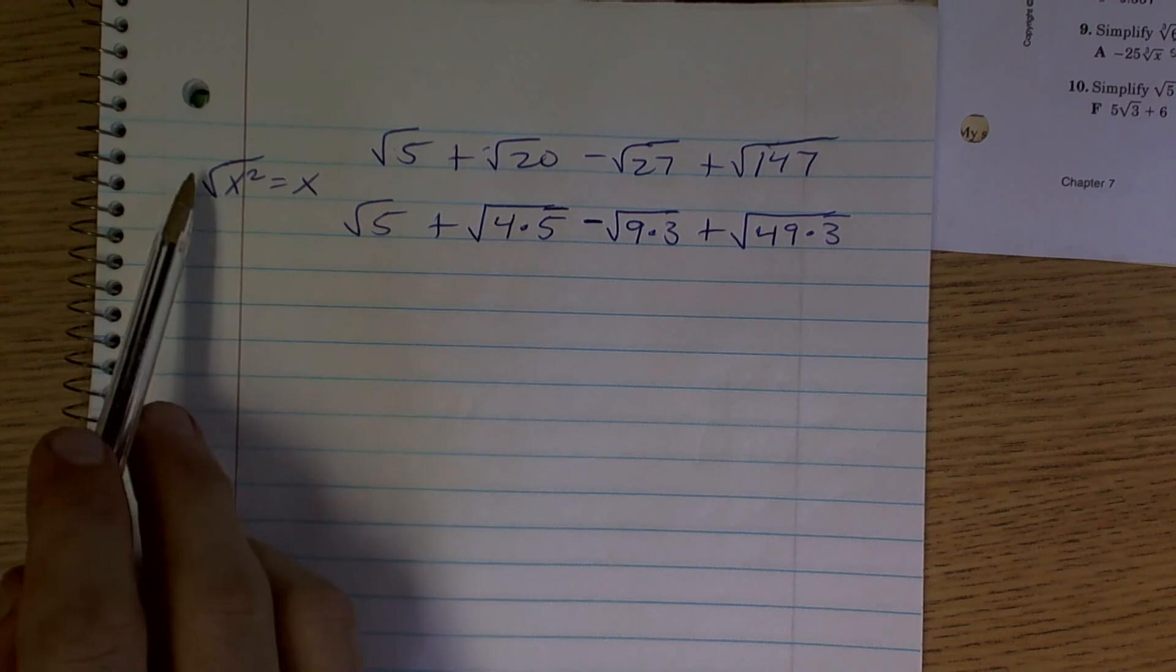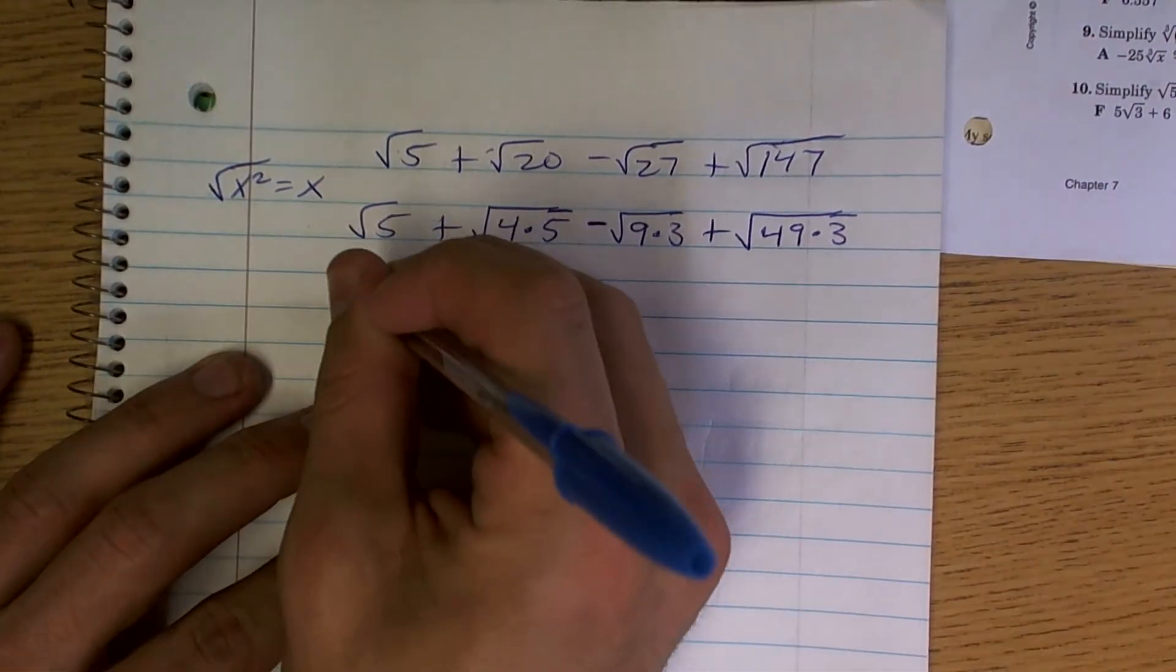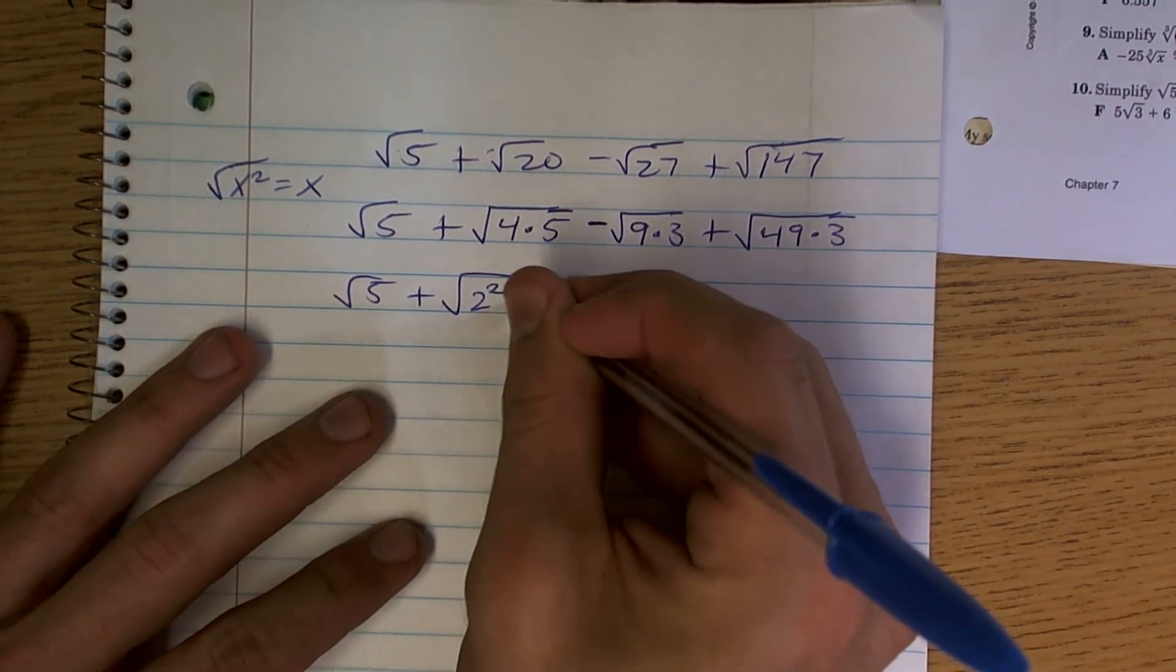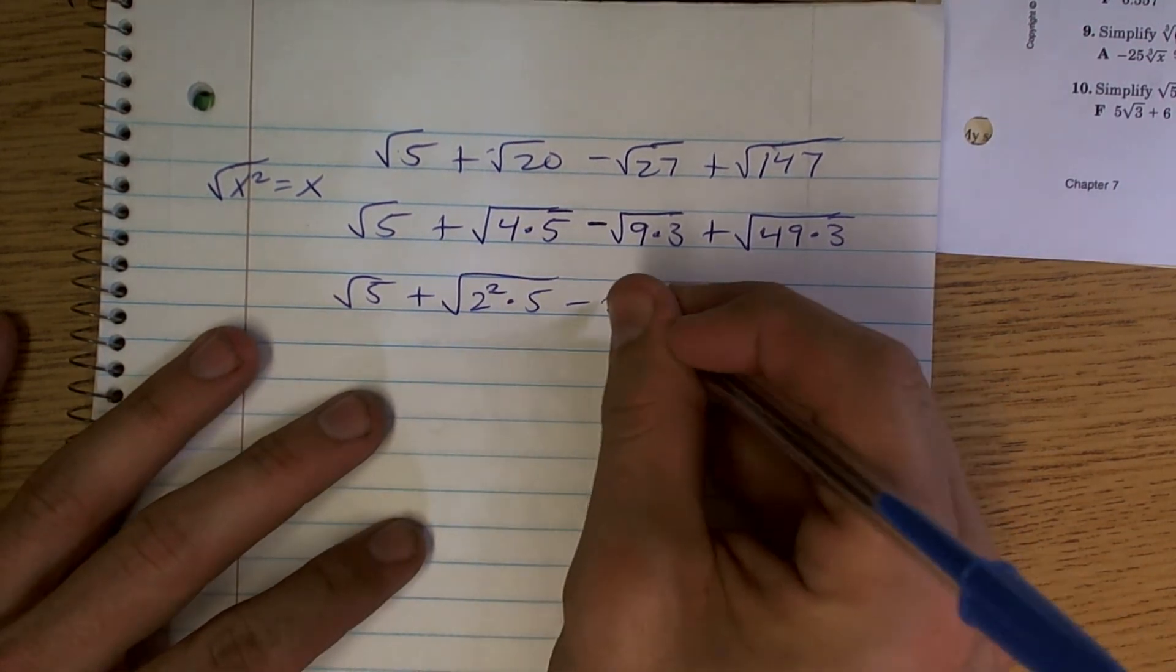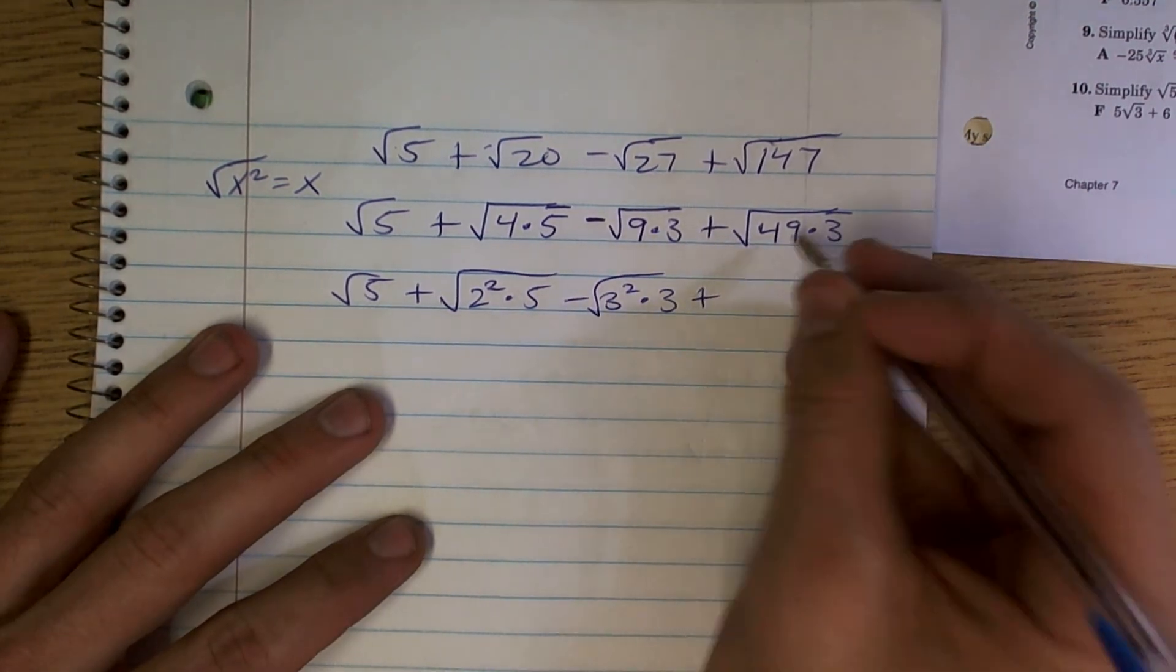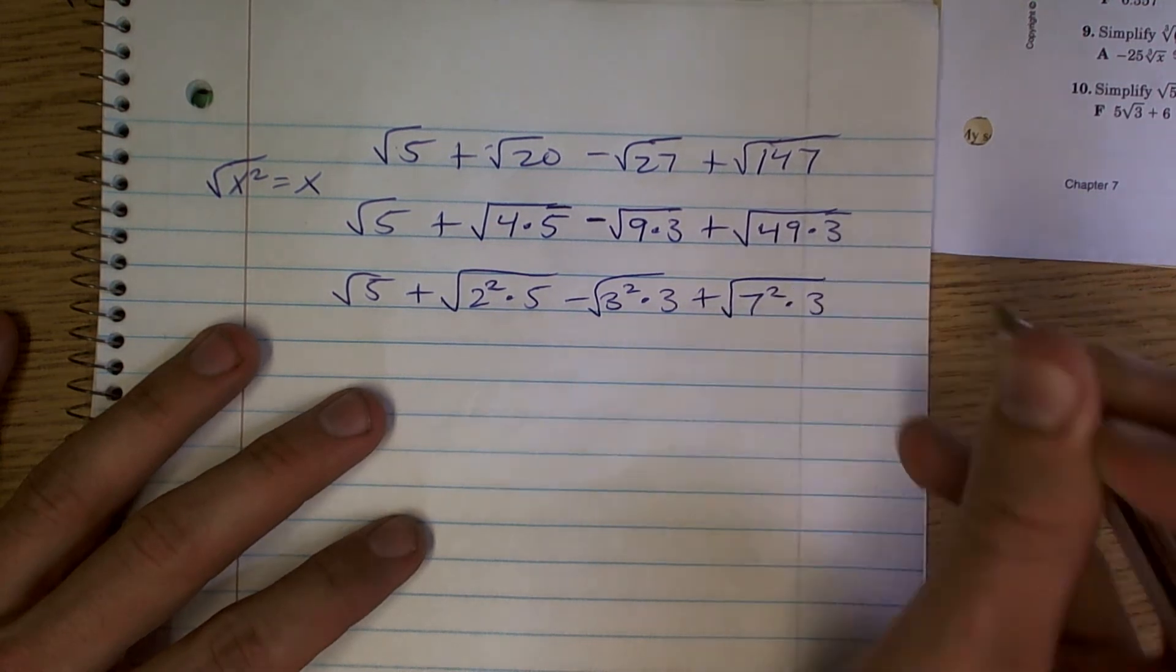And then if I wanted to follow the terms of writing it as a square number, I could say square root of 5 plus square root of 2 squared times 5 minus square root of 3 squared times 3 plus the square root of 49, so it would be 7 squared times 3.